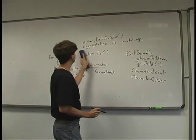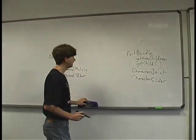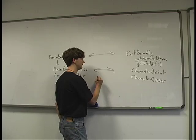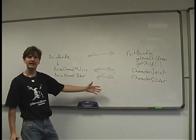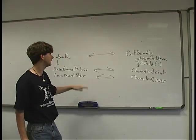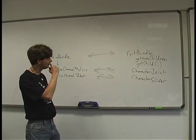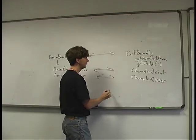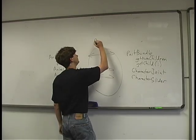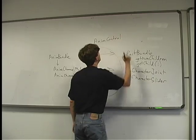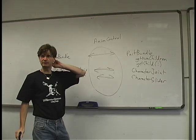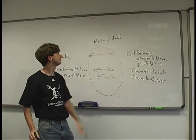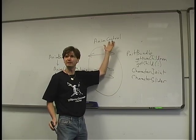We have an operation called binding, which associates the AnimBundle to the PartBundle. All corresponding hierarchy entries get associated one-to-one. This is an internal function inside Actor — if you're using the C interface you have to bind explicitly, but with Actor it happens automatically when you play an animation. The result of binding gets stored in an AnimControl. The AnimControl has all the play controls: play, rewind, and anything you need to control an animation. When you call actor.play(), what it's really doing is getting the AnimControl and calling play on that.